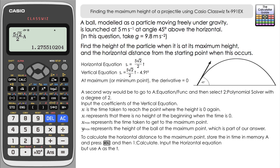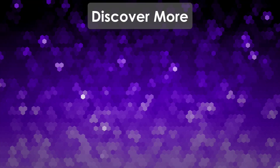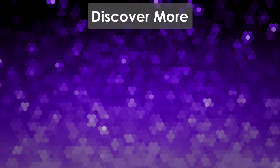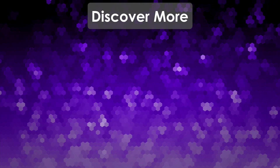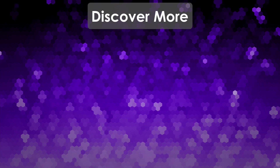So there are two methods for using the calculator to find the maximum height of a ball modelled as a particle. Method 1 uses the derivative set to zero with Shift Solve, then substitutes the time into the horizontal and vertical equations. Method 2 uses the polynomial solver on the parabolic path to read off the coordinates of the maximum point, then uses the horizontal equation for the horizontal distance. Thanks for watching — see you next time on the Calculator Guide.